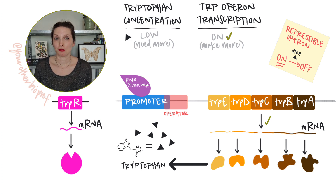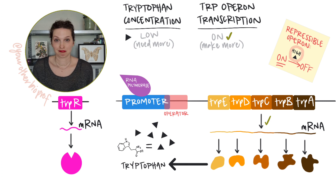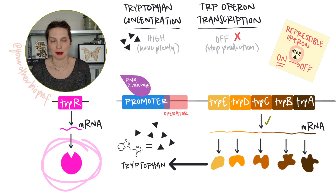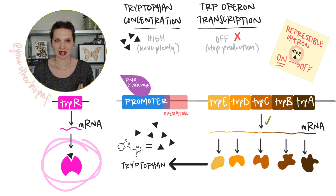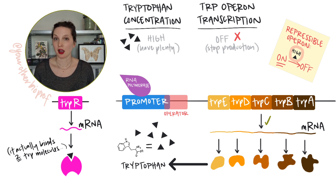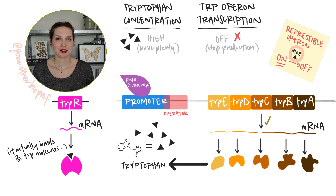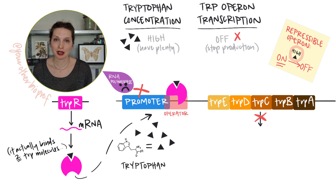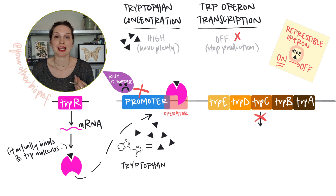But the trp operon can be repressed — transcription can be turned off — under certain conditions. And that condition is: we've got enough tryptophan. When tryptophan is piling up, the trp repressor, which until now has just been hanging out in the background, will bind to some of that excess tryptophan. This causes a conformational change in the trp repressor, opening up a DNA binding site. The trp repressor then binds to the operator region, which overlaps the promoter just a little bit. When the trp repressor is bound to the operator, it's blocking RNA polymerase from binding to the promoter to initiate transcription. Having a regulatory protein that inhibits transcription when it binds to the operon is called negative gene regulation.